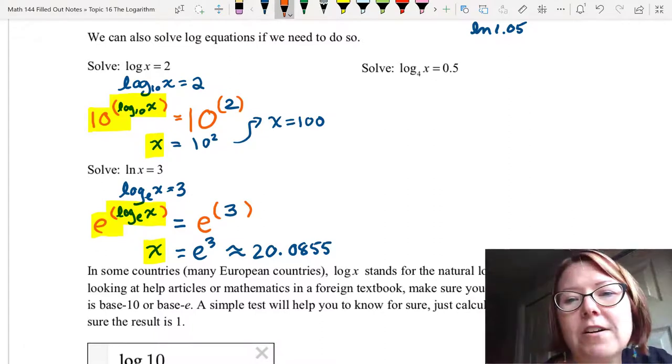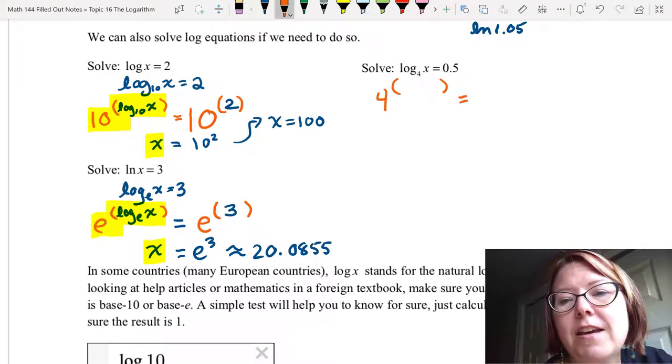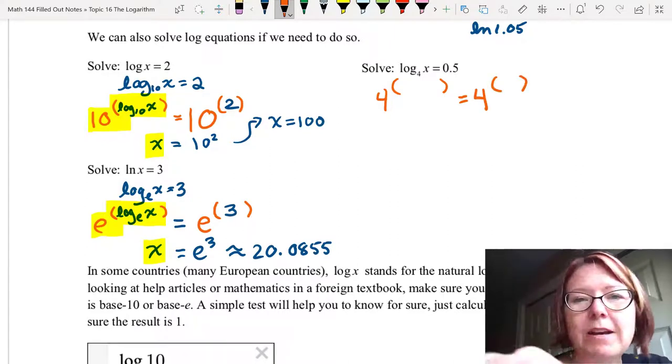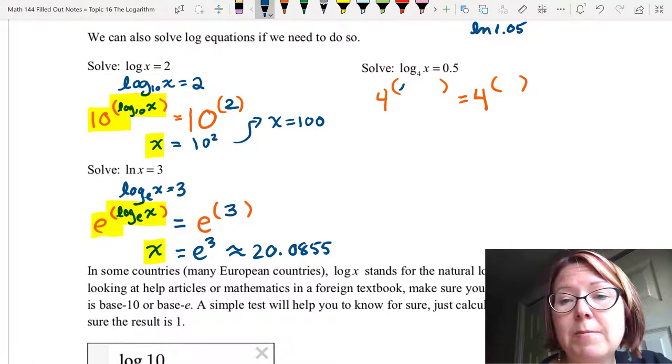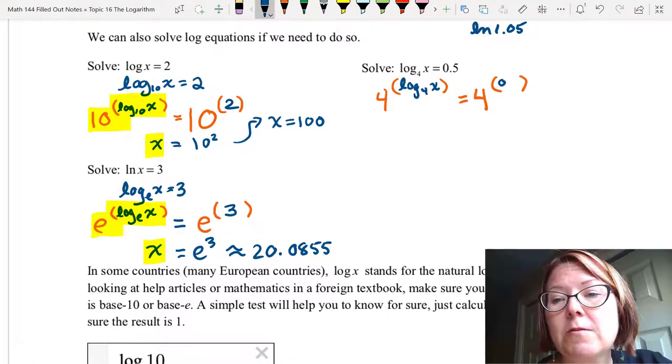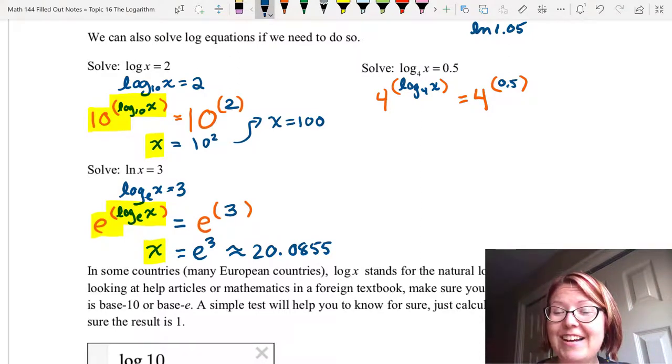So I'm going to do 4 to the something, leave a set of open parentheses on the left. And 4 to the something, leave a set of open parentheses on the right. In those parentheses on the left, I'm going to write log base 4 of x. And in the parentheses on the right, I'll write 0.5. So now if I read this whole equation, I have 4 to the log base 4 of x equals 4 to the 0.5.